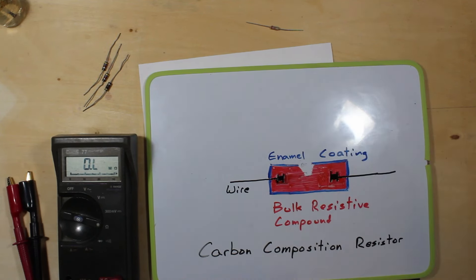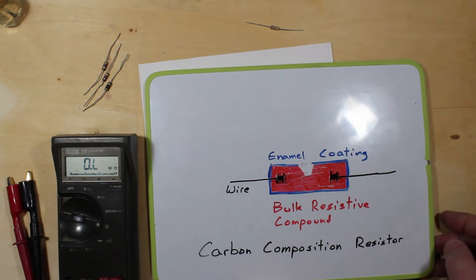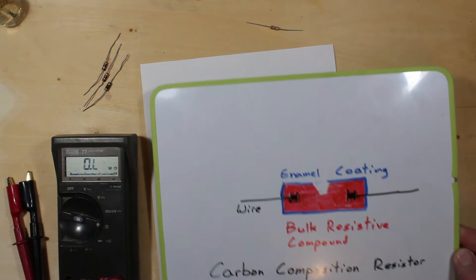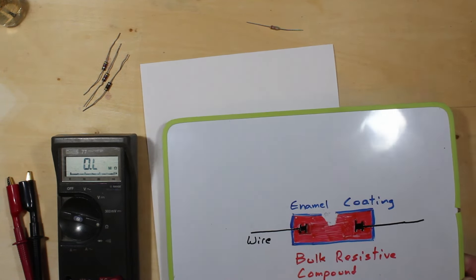And that increase in resistance in this area right here will bring us up to what we want to be. We're at 4700 ohms approximately right now, we're shooting for 5000.